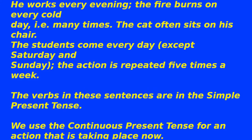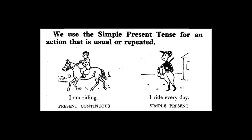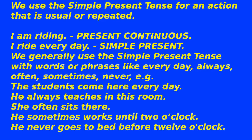We use the continuous present tense for an action that is taking place now. We use the simple present tense for an action that is usual or repeated. For example: 'I am riding' — present continuous. 'I ride every day' — simple present.